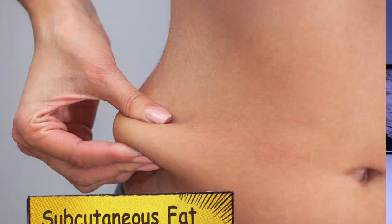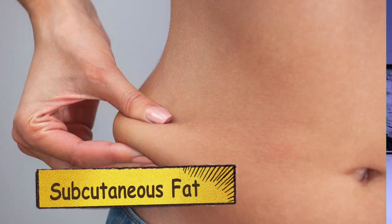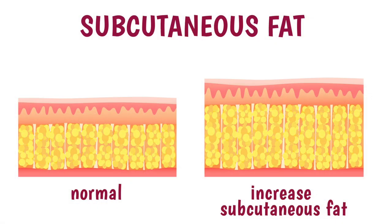Subcutaneous fat is found between the skin and your muscles. This fat is located all over the body. When someone gains weight, this fat increases in number.